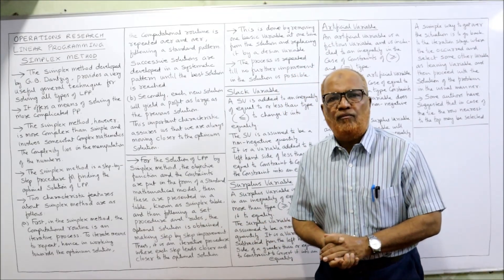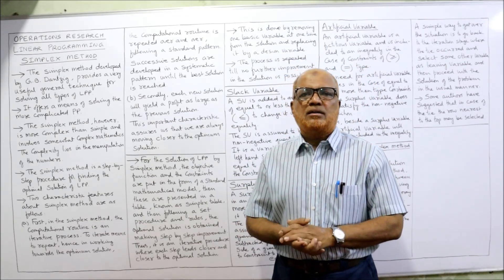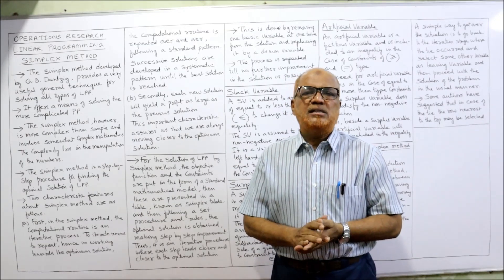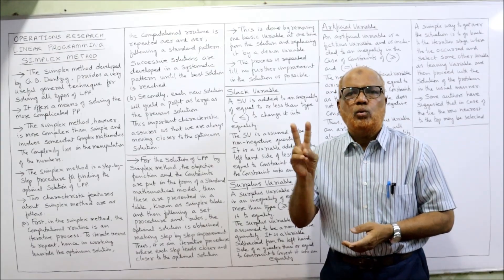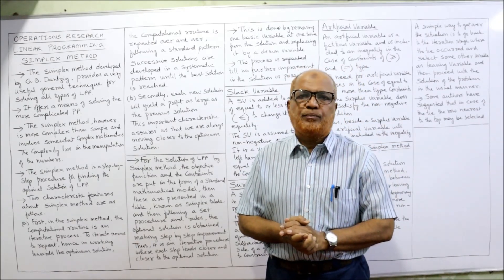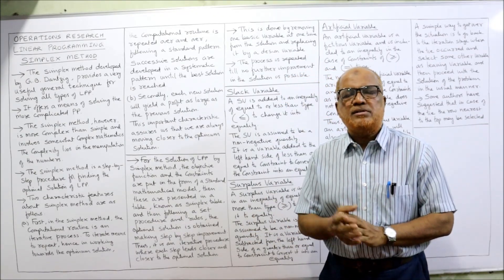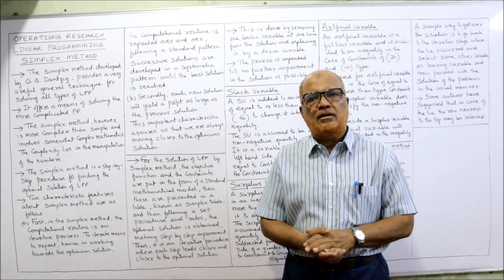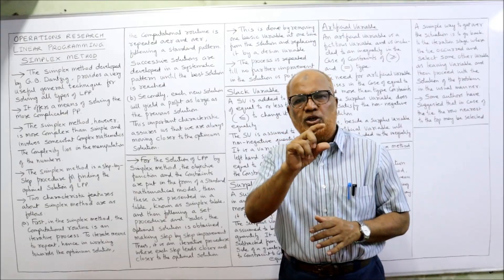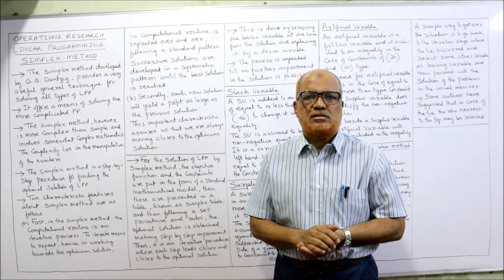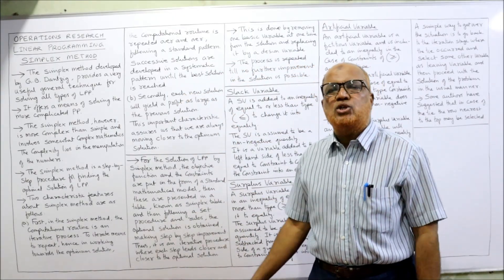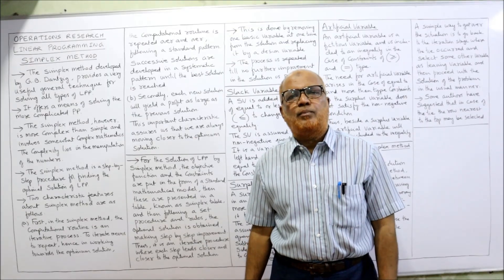There are two methods for solving linear programming. One method is the graphical method and the second method is the simplex method. The graphical method is a simple method that can be applied when we have only two decision variables. But when the number of decision variables is three or more, we cannot apply the graphical method — we have to apply the simplex method. Actually, the name should be 'complex method'; don't think that simplex method means it will be very simple. It requires a lot of calculations. Please take a screenshot of the points I have written on the board.